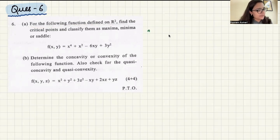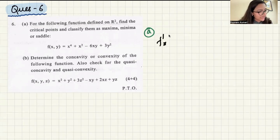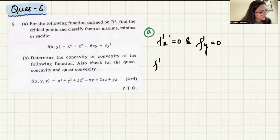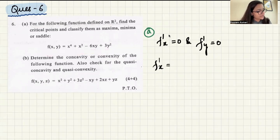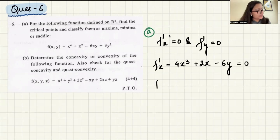For critical points, the first thing you need is your derivatives. Both your partial derivatives have to be zero at the same time — f'x has to be zero and f'y also has to be zero. So f'x, the partial derivative with respect to x, is going to be 4x³ + 2x − 6y = 0. And f'y is going to be −6x + 6y = 0.